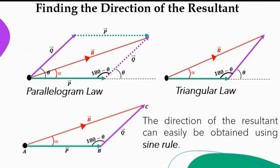Of course, you can also use cosine rule to find the direction of the resultant, but it will be quicker and faster to use cosine rule.